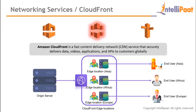Amazon CloudFront is a content delivery network (CDN) that securely delivers data, videos, audio, applications, and APIs to customers globally. For example, YouTube uses a CDN to serve videos. CloudFront has multiple edge locations across the globe. When users from different parts of the world request the same file, each user is served from the nearest CloudFront edge location, which fetches from the origin server — making content delivery faster, more secure, and efficient.